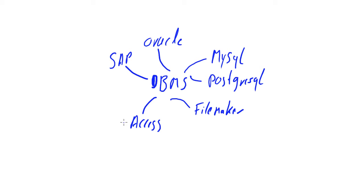Access itself is part of the Microsoft Office package. There are various versions of Office — if I'm not mistaken, it's part of the Office Professional version, because the standard Office package just includes Word, Excel, PowerPoint, and some other smaller programs. Access is not part of that standard package; it's part of Microsoft Office Professional, though I'm not sure exactly what it's called right now.